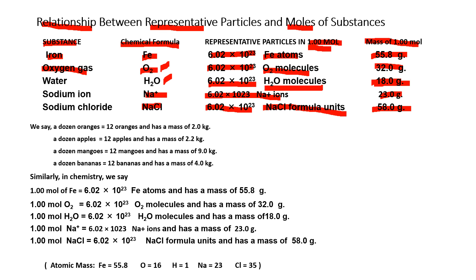The mass of one mole of NaCl is 58 grams. Similarly, a dozen oranges has 12 oranges with a mass of 2 kilograms; a dozen apples has 12 apples with a mass of 2.2 kilograms; a dozen mangoes has 12 mangoes with a mass of 9 kilograms; a dozen bananas has 12 bananas with a mass of 4 kilograms. They have the same number but different masses — and similarly in chemistry, these substances all contain the same number of particles but have different molar masses.